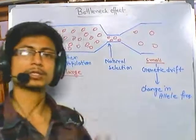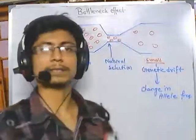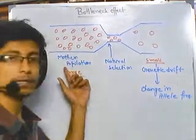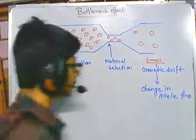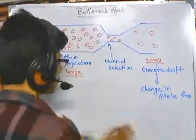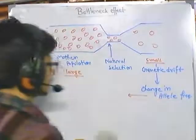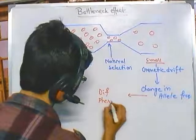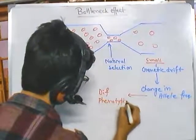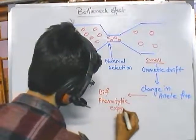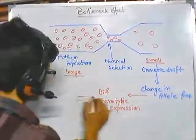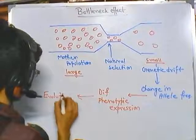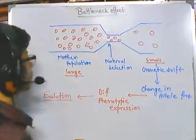As the allele frequency starts to change, it will finally convert this population into something entirely different compared to the mother population members. What we get is a different type — a different phenotypic expression in the population. So we can say it finally sets in evolution. That's what the bottleneck effect is.